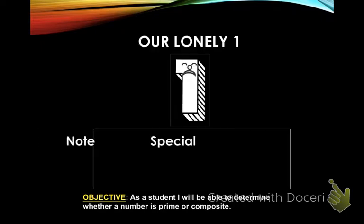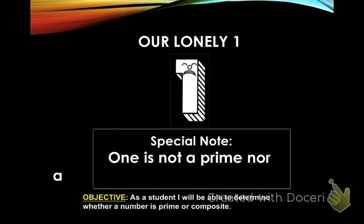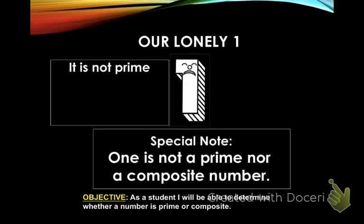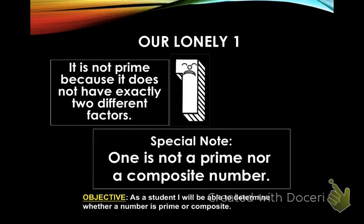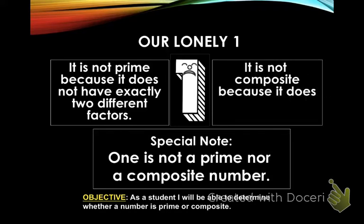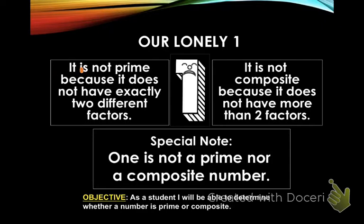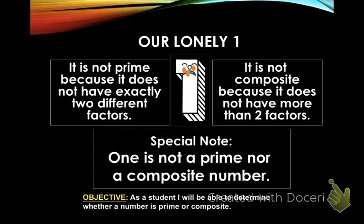What about the number one? We talked about this earlier — one is not a prime number, and it's also not a composite number. It's not prime because it does not have exactly two different factors: one times one are the same, so it's just one factor. And it's not composite because it doesn't have more than two factors. One is neither prime nor composite.